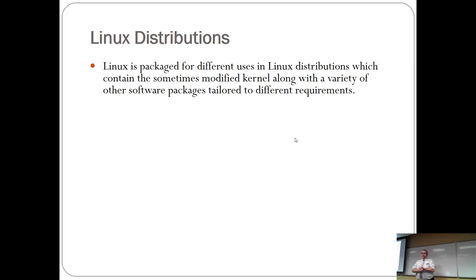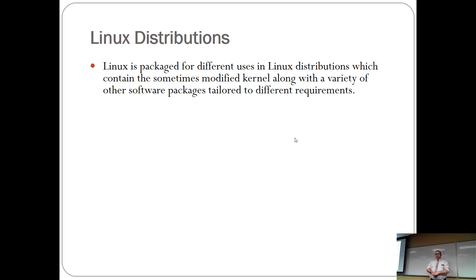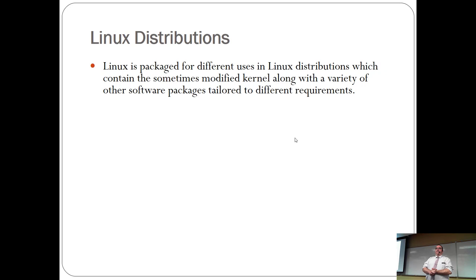Linux is packaged for different uses as distributions depending on what you need. The PlayStation 3 was running Linux — you could actually install Linux on it and run real Linux instead of the specialized Sony edition. Pretty much every firewall now is running Linux in some form. Odds are your router at home is running Linux — I know my Bell router is running Linux because I figured out how to open a port and ask it what it was. So if you've got a Bell Home 2000, congratulations, you're running Linux.